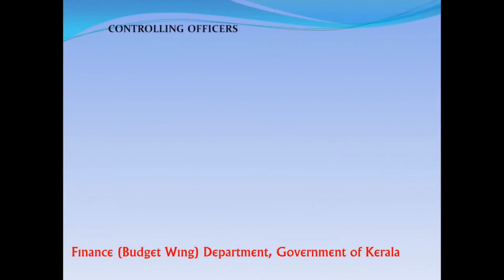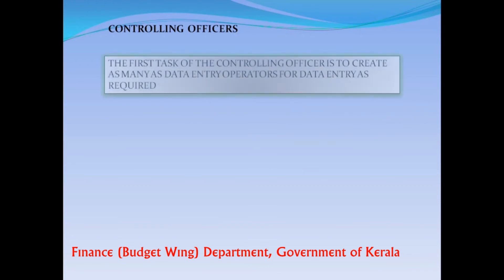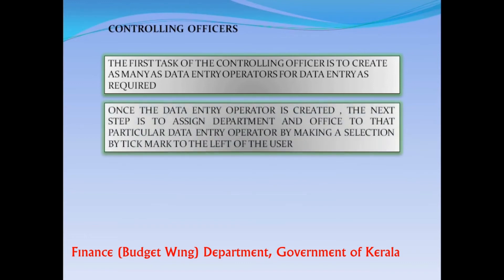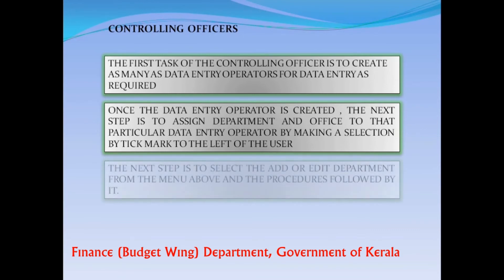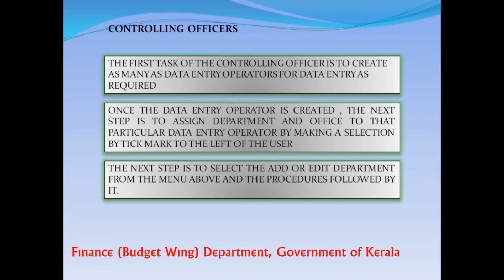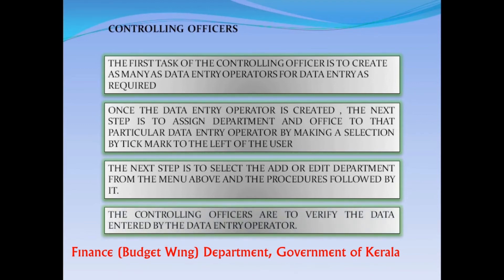The first task of the Controlling Officer is to create as many Data Entry Operators for data entry as required. Once a Data Entry Operator is created, the next step is to assign a department and office to that particular operator by making a selection with a tick mark to the left of the user. The next step is to select Add or Edit Department from the menu above and follow the procedures. The Controlling Officers are also required to verify the data entered by the Data Entry Operator.